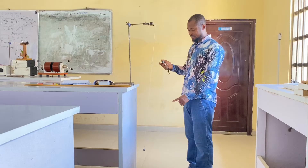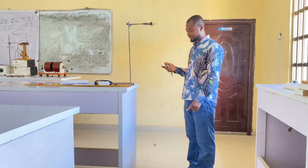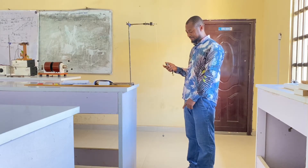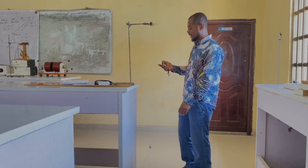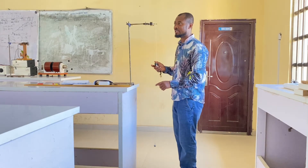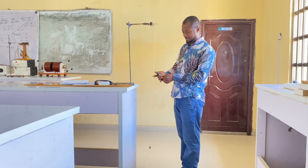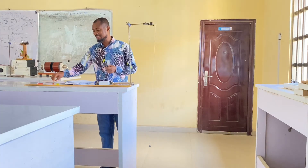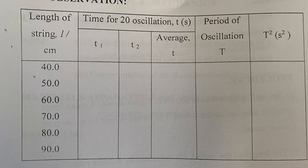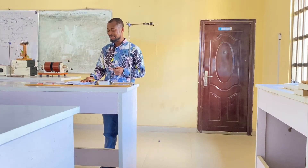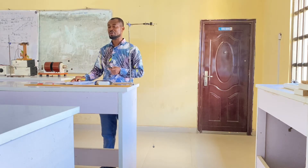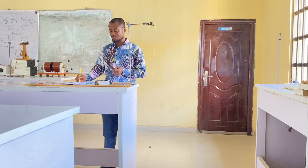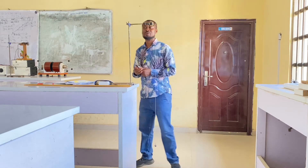We are starting. I press and count: 1, 2, 3, 4, 5... I stop my stopwatch at 20 oscillations, which gives me 44.09 seconds. I have my table drawn out, which is made up of columns for length, time T1, T2, T average, period T, and period squared T². I record 44.09 as my first time T1.